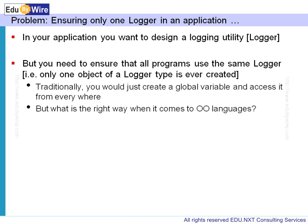How would we solve this problem traditionally? We would just create a global variable. Suppose I was programming in C — I would just create a global variable logger and access it. But there is a problem: it's accessible, but it's not a read-only variable. Somebody can go and create another global variable, or somebody can just change that instance variable to point to something else. Things can go wrong.